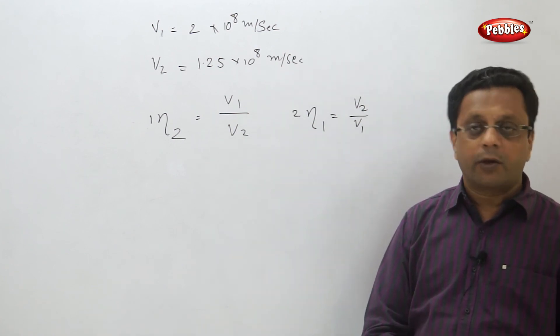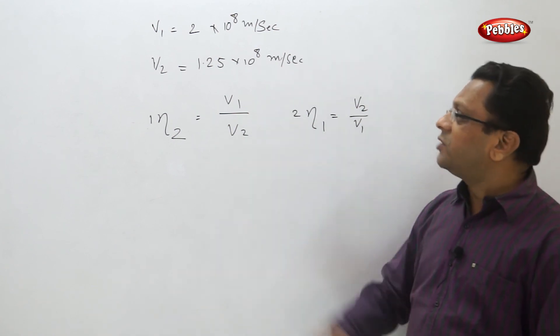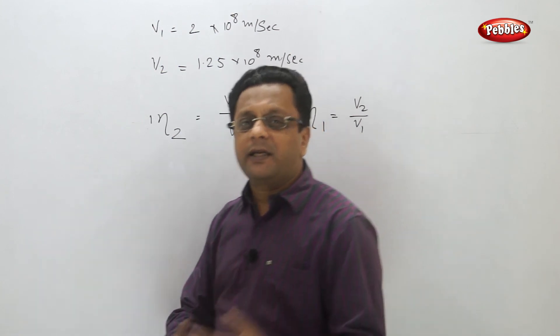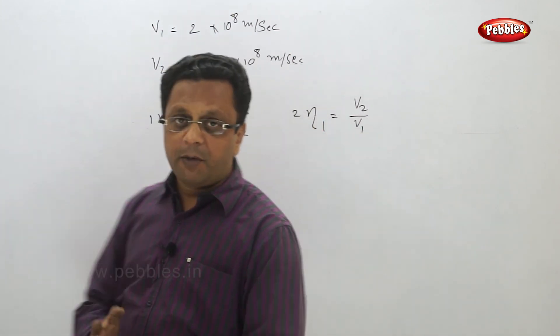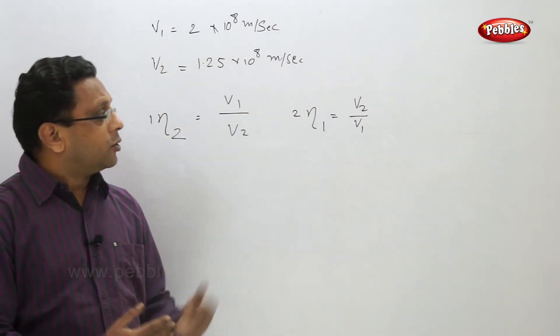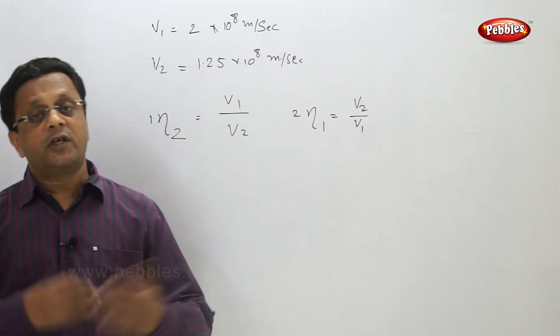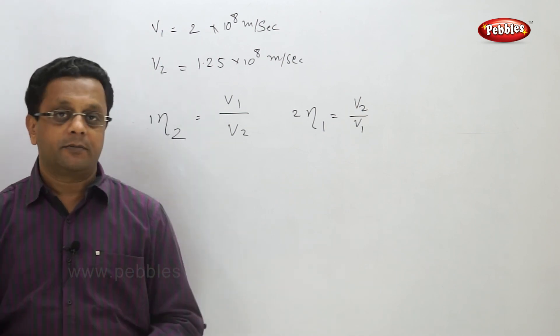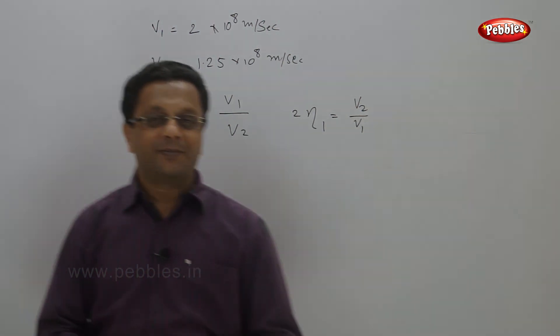When two velocities of different mediums are given and absolute velocity is not given, one medium is not air. Sometimes they may give the absolute velocity of light in diamond or some other medium and ask for the refractive index of air. In that case, the first medium is air and you know the velocity of light in air — you can find out the refractive index. These were very simple examples; now we will move towards the question-answer session on this chapter. Thank you.